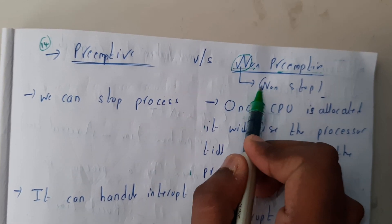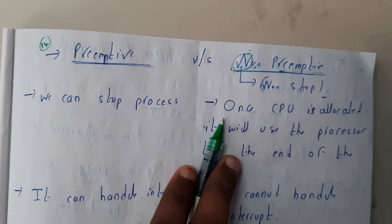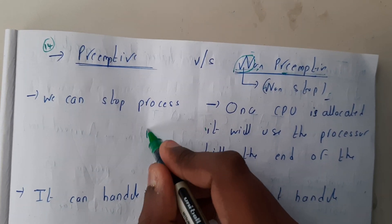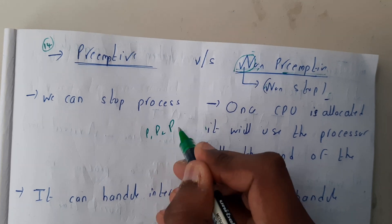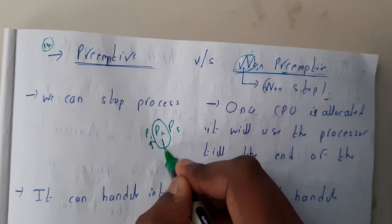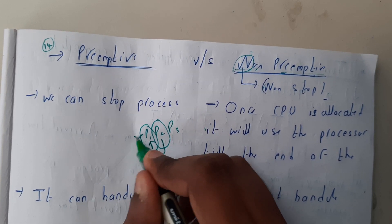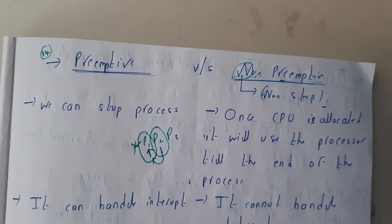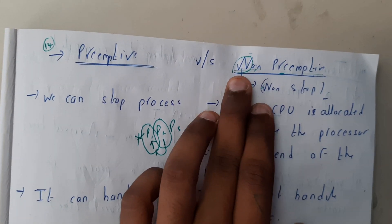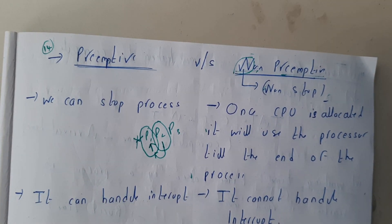So non-preemptive means non-stop. If there are processes P1, P2, P3, and P1 is executing while P2 has really high priority and comes for execution, until and unless P1 completes its execution it is not going to give any chance or allocation for P2. So this is non-preemptive — non-stop.